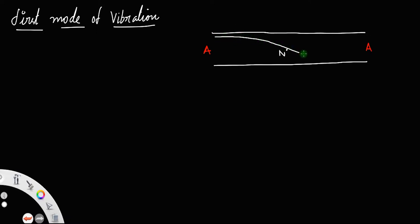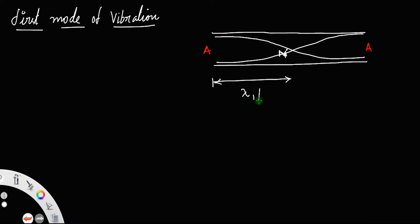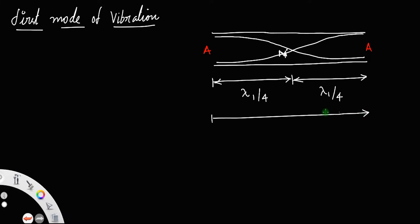The stationary wave for the first mode looks like this: an anti-node at each end and a node formed in the middle. We know the distance between an anti-node and a node is λ/4. For the first mode, we write λ₁/4 for each half, so we have 2 times λ₁/4 equal to L, which gives λ₁/4 + λ₁/4 = L, implying λ₁ = 2L.